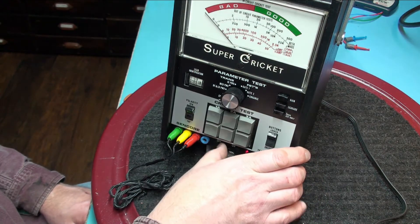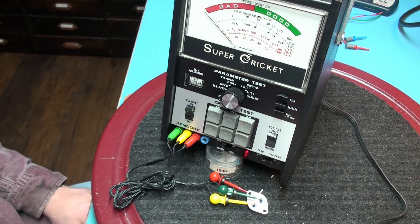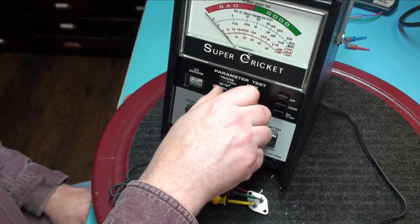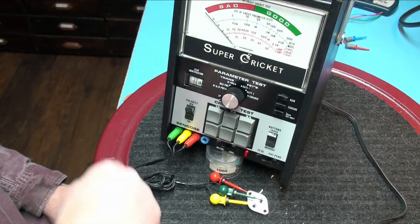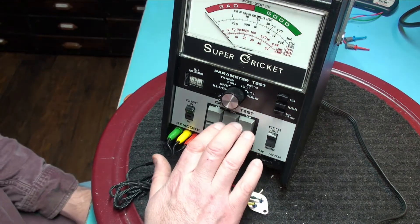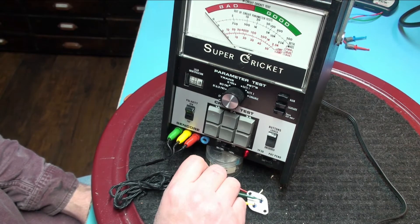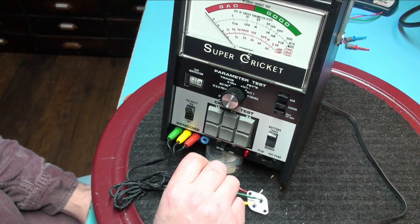We are going to go ahead and turn on the device. We are going to make sure that the parameter test switch is in the cricket mode. Basically the cricket mode is a diode test and this is going to help us determine the polarity and the lead identification.